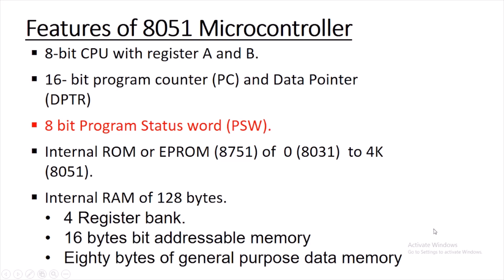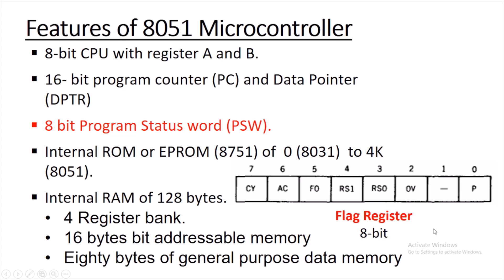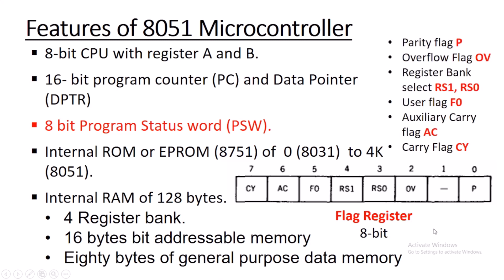8051 is having an 8-bit program status word (PSW). When 8051 performs any arithmetic and logical operations, the status of that operation is reflected in various flags available in the program status word. Those flags can be set or reset, so the program status word is also known as the flag register. It consists of a parity flag, overflow flag, and two bits RS1 and RS0 which are used to select register banks. At a time only one register bank is selected, which depends on the status of RS1 and RS0.